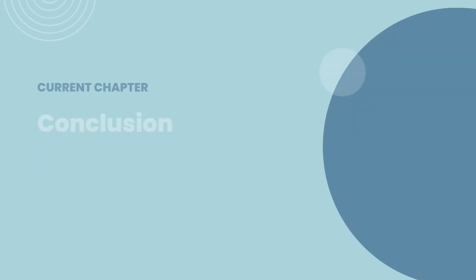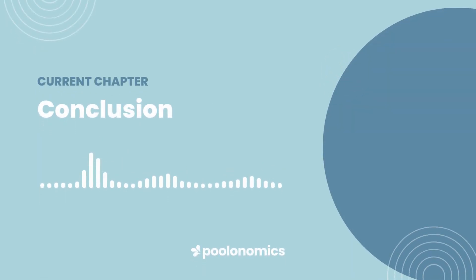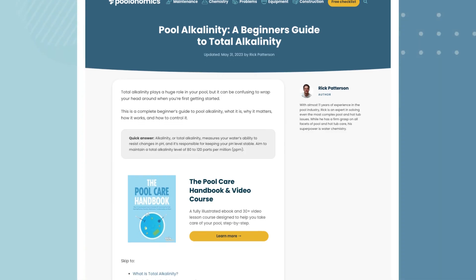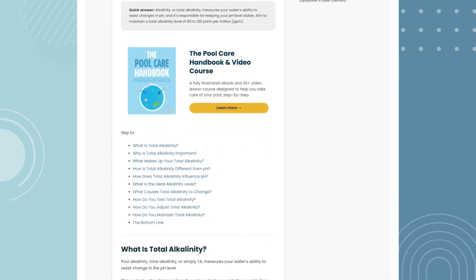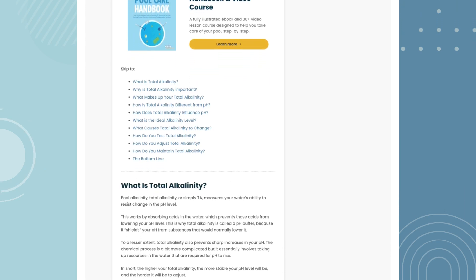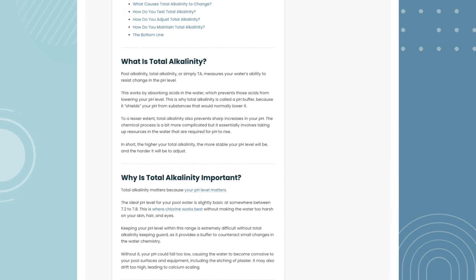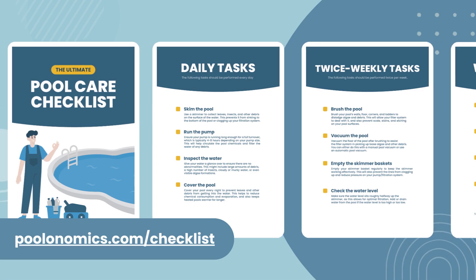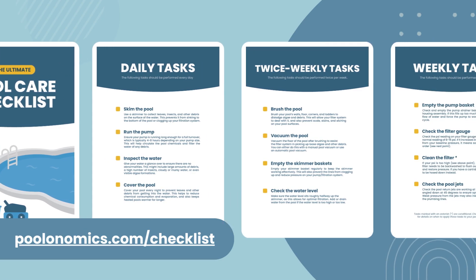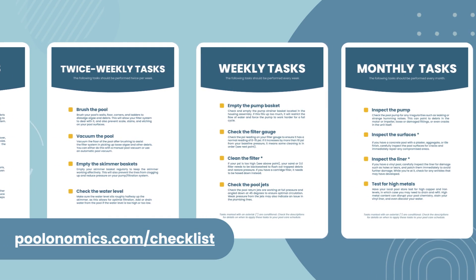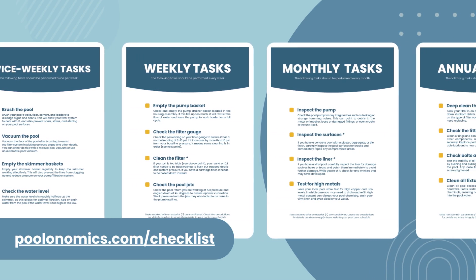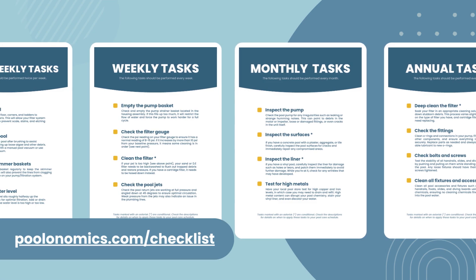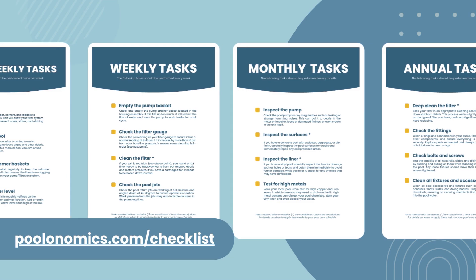So there you have it — a complete overview and beginner's guide to total alkalinity in your pool. Check the description below for links to our full companion article, along with supporting articles for many of the points discussed in the video. We also have a free downloadable and printable checklist to help with your pool maintenance schedule. You can get it for free at poolonomics.com/checklist.